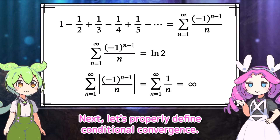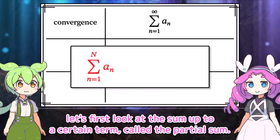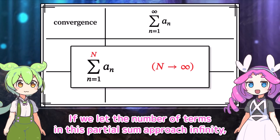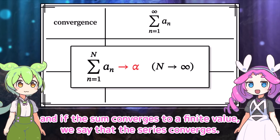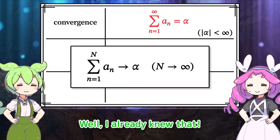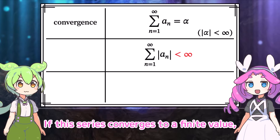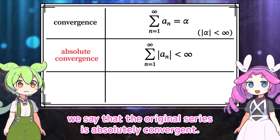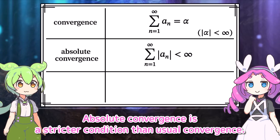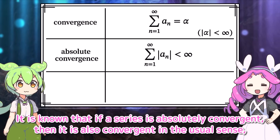Let's properly define conditional convergence. First, we review the definition of convergence. Before considering the sum of infinitely many terms, let's look at the partial sum — the sum up to a certain term. If we let the number of terms approach infinity and the sum converges to a finite value, we say the series converges. We then consider this limit value alpha as the sum of infinitely many terms. Next, let's consider the series formed by taking the absolute value of each term. If this series converges to a finite value, we say that the original series is absolutely convergent. Absolute convergence is a stricter condition than usual convergence.